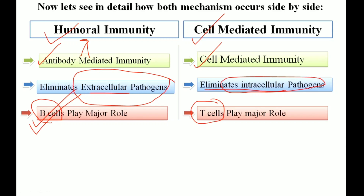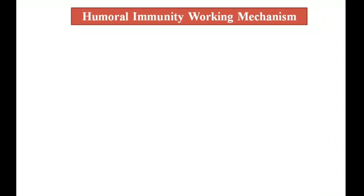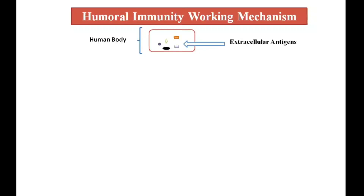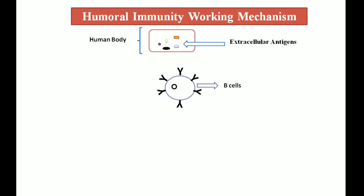Now let's see how humoral immunity works. In humoral immunity, whenever the immune system detects the presence of an extracellular antigen, it triggers a defense mechanism. The B cells of the immune system come into action and bind to the antigens for which they are specific, using their receptors.